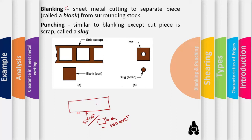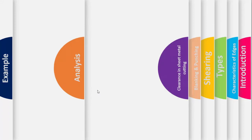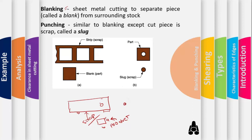In punching, you create a hole of a specific dimension at a specific location in the sheet. The material punched out is the slug (scrap), and the sheet with the hole is the product. In blanking, the cut-out metal piece is the product and the remaining sheet with the hole is scrap. Blanking and punching are essentially opposite operations of each other.